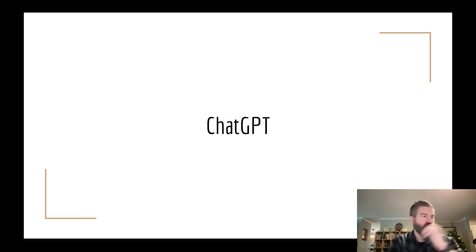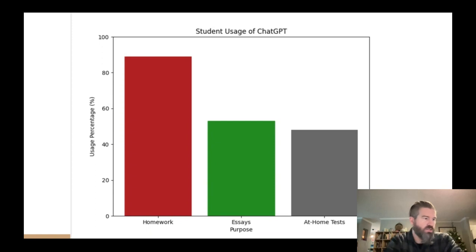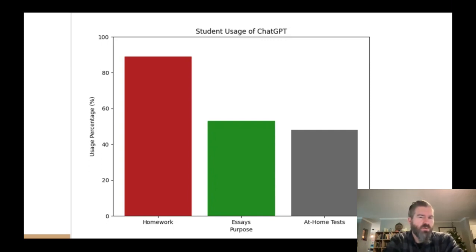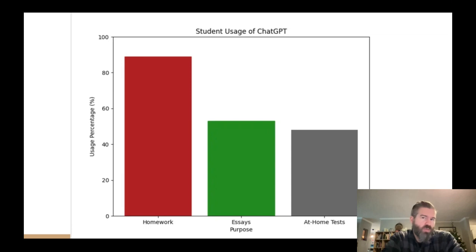So first things first, according to Nerdy Nav — which is a website, and this is consistent with other things I've found — so somewhere around 90% of students surveyed used ChatGPT for homework, about 60% for essays, and about 50% for at-home tests. Now this is just one survey, and we can see how it compares to others. But what strikes me is that most students, it seems, have at least tried ChatGPT.